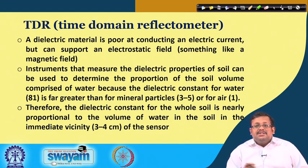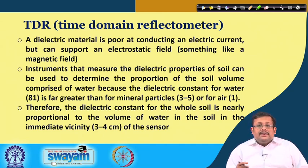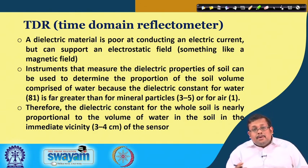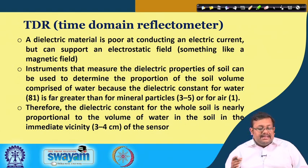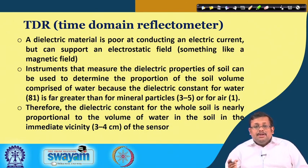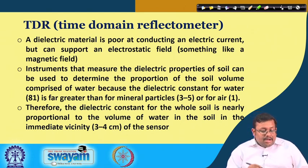The dielectric constant of water is 18, which is far greater than other mineral particles or air. In the case of mineral particles the dielectric constant varies from 3 to 5, and for air it is 1. Therefore the dielectric constant of the whole soil is nearly proportional to the volume of water in the soil within about 3 to 4 centimeters of the sensor.